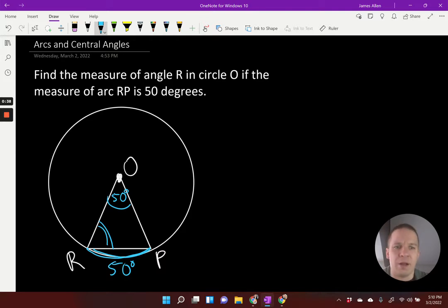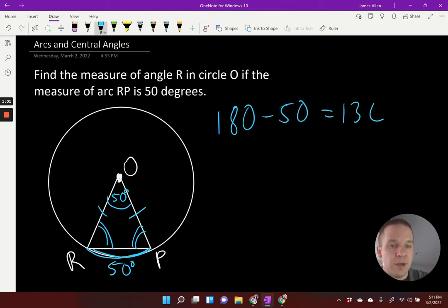Well, I do know that this is a circle, and in a circle my radii are congruent. So OR and OP would be congruent. Now if those two are congruent, wouldn't that mean that my base angles are also congruent? So R and P are equal to each other. Well, if 50 degrees is already accounted for out of a total of 180 in a triangle, that leaves me with 130.